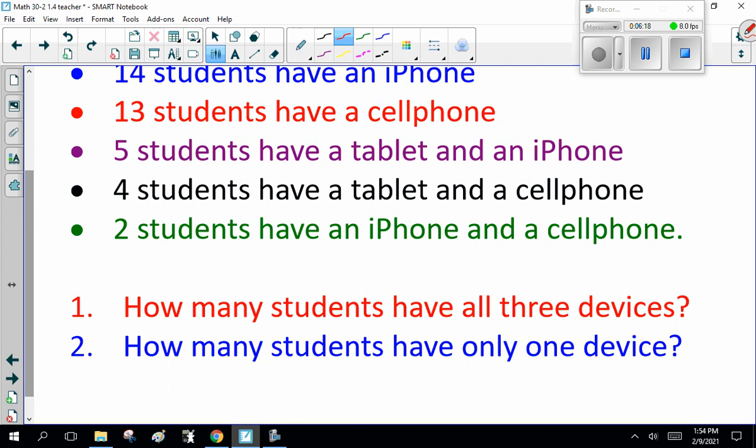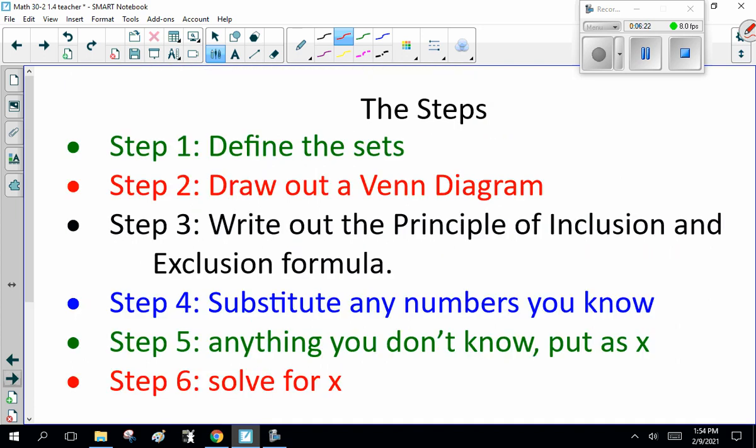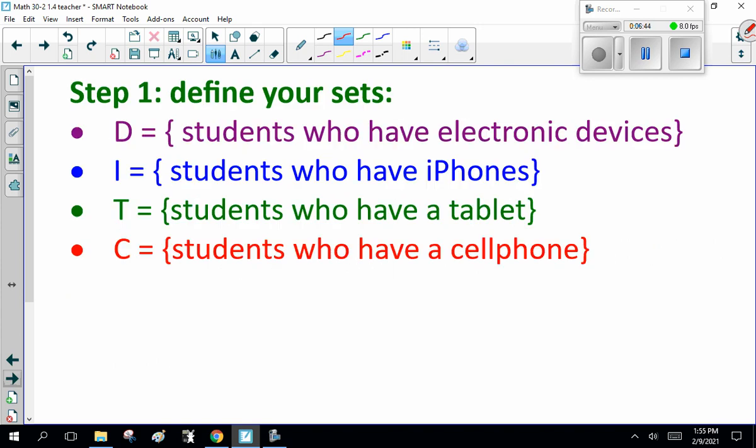Like I said, I'm showing you how this formula goes, relax. If you don't like it, you can just fill in the Venn diagram and find that. But I have to show you the formula. Step one, define the sets. Step two, draw the Venn diagram. Step three, write out the principle of inclusion and exclusion formula. Step four, substitute any numbers you know. Step five, anything you don't know for this X. Step six, solve for X.